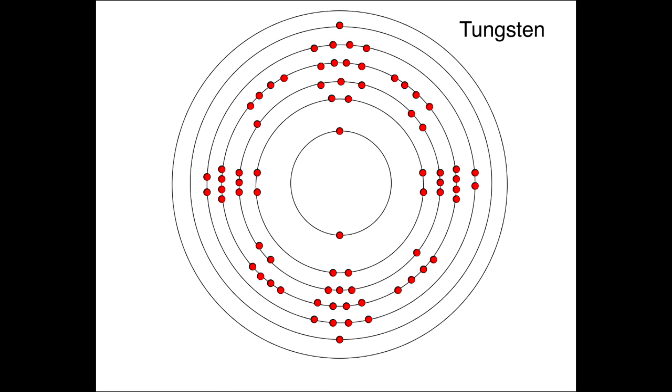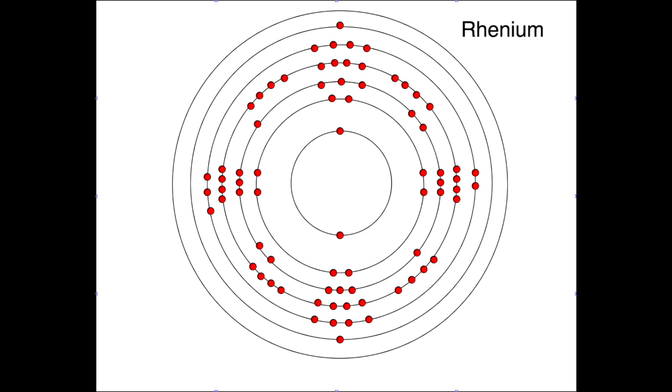Hafnium, tantalum, tungsten and then we're on to rhenium, osmium and iridium. Platinum, gold to make you rich till you grow old. Mercury to tell you when it's really cold.